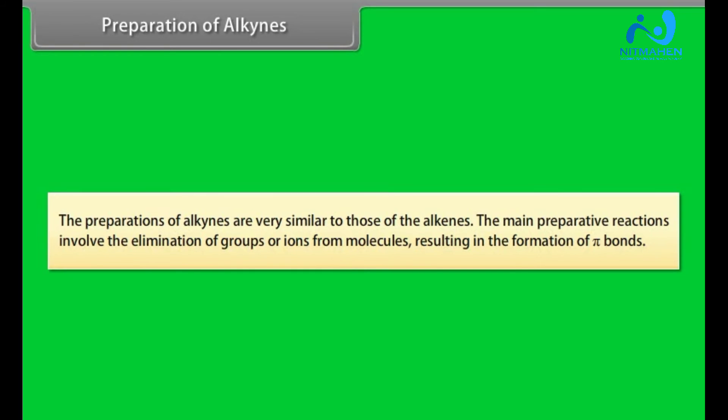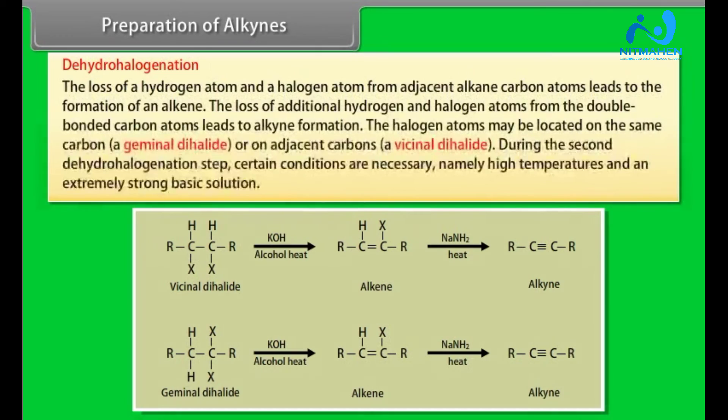Preparation of alkynes. The preparations of alkynes are very similar to those of the alkenes. The main preparative reactions involve the elimination of groups or ions from molecules resulting in the formation of pi bonds. Dehydrohalogenation: The loss of a hydrogen atom and a halogen atom from adjacent alkene carbon atom leads to the formation of an alkene. The loss of the additional hydrogen and halogen atoms from the double bonded carbon atoms leads to the alkyne formation. The halogen atoms may be located on the same carbon, a geminal dihalide or on adjacent carbons, a vicinal dihalide. During the second dehydrohalogenation step, certain conditions are necessary, namely high temperatures and an extremely strong basic solution.